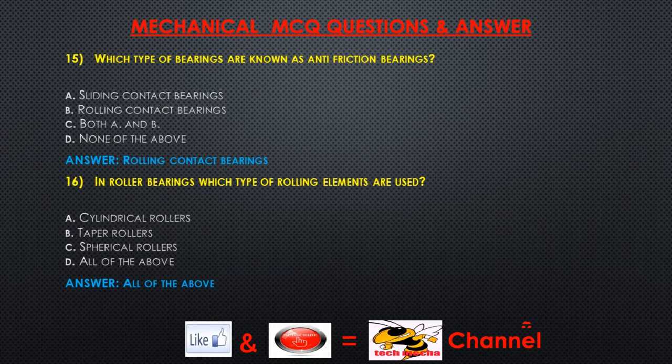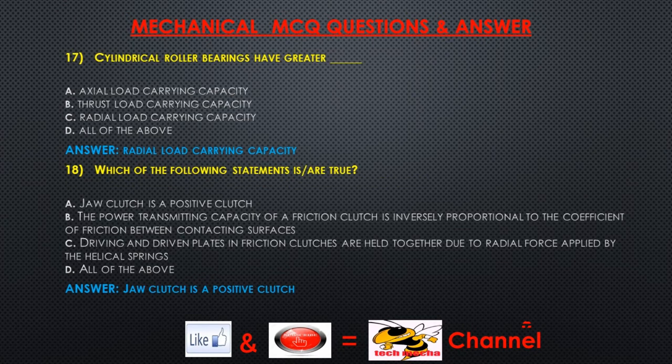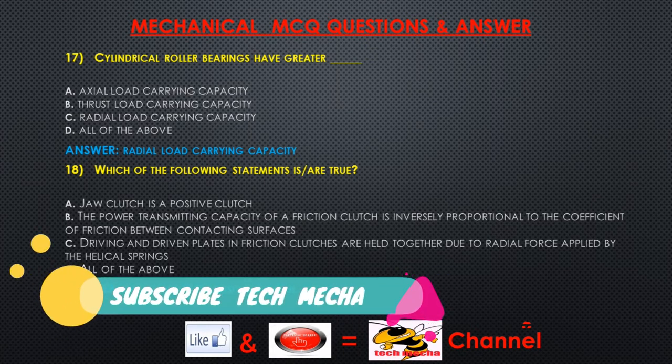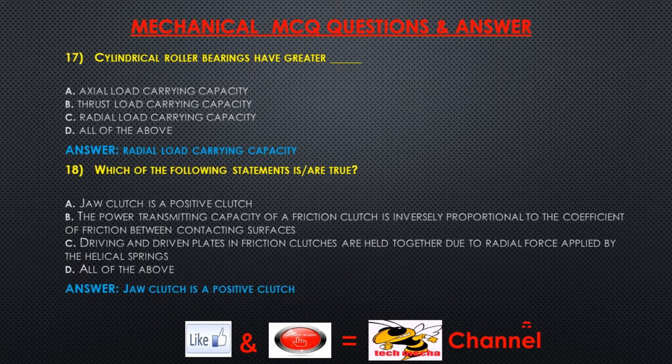Question 16: In roller bearings, which type of rolling elements are used? A) cylindrical rollers, B) taper rollers, C) spherical rollers, D) all of the above. Answer: All of the above. Question 17: Cylindrical roller bearings have greater — A) axial load carrying capacity, B) thrust load carrying capacity, C) radial load carrying capacity, D) all of the above. Answer: Radial load carrying capacity.